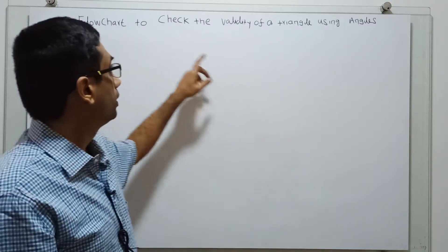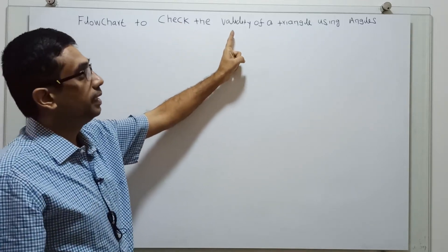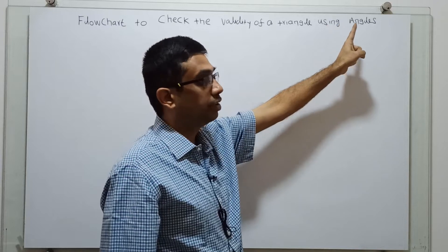Hi friends, today we are going to try a flowchart to check the validity of a triangle using angles.